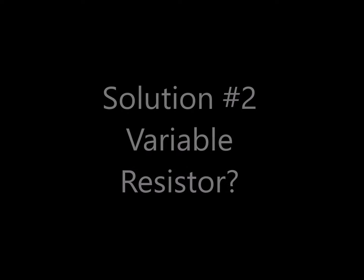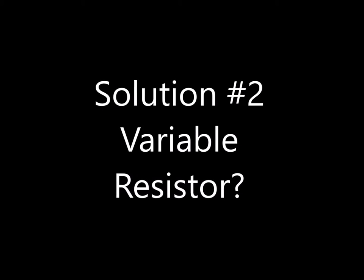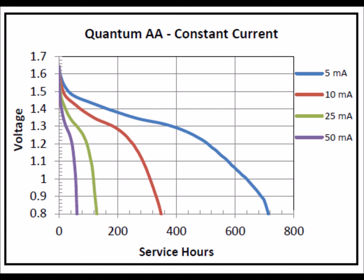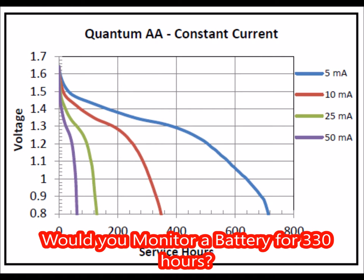How about using a variable resistor and adjusting the resistance as the voltage drops? You could do that. You could take a variable resistor — maybe 2k in value — put it in series with an ammeter, watch the current over about 330 to 340 hours, and continually tweak it down as the voltage drops. Adjust the variable resistor down and keep track of the voltages on a chart. That would certainly work and is probably a cheap way to go.